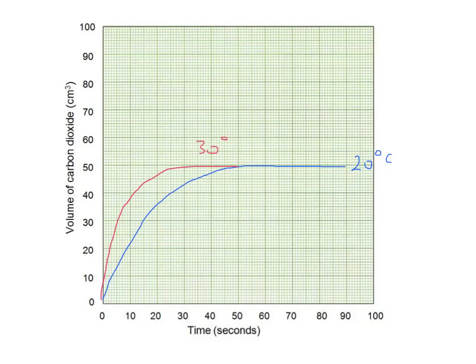And at 40 degrees C it would be steeper still. So the steepness of the graph tells us that the reaction is getting faster, and the reaction gets faster as you raise the temperature. But why is that?